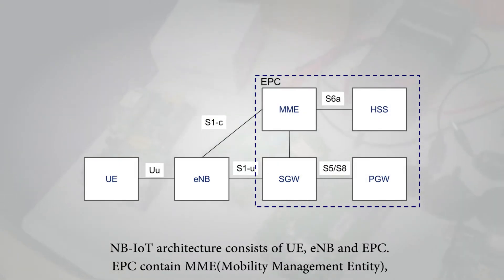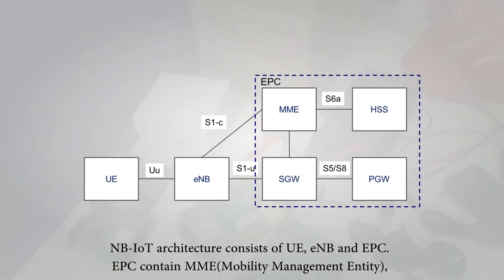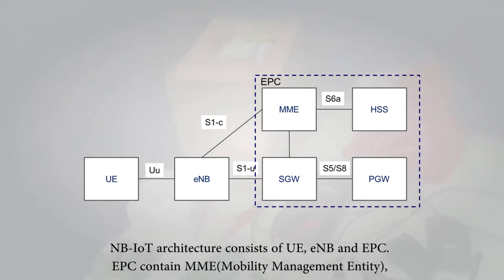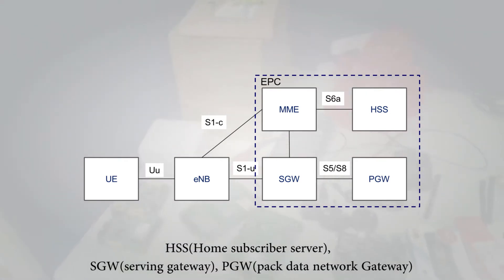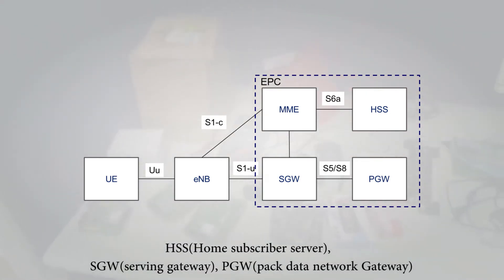The NB-IoT architecture consists of UE, eNodeB, and EPC. The EPC contains MME, HSS, SGW, and PGW.